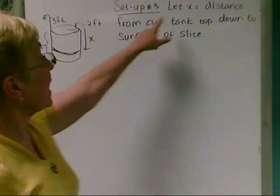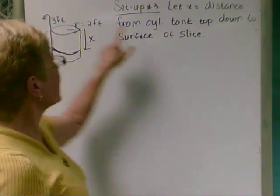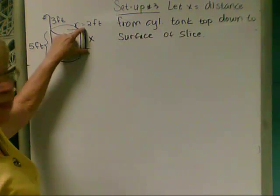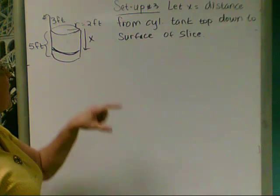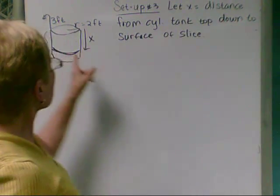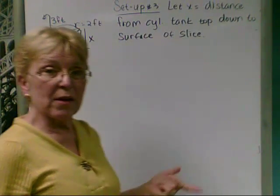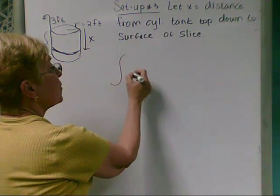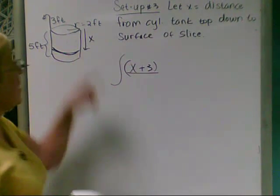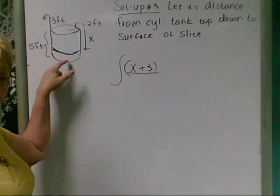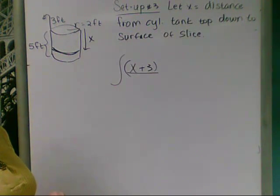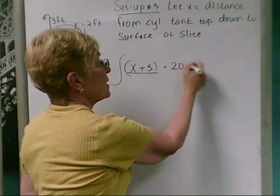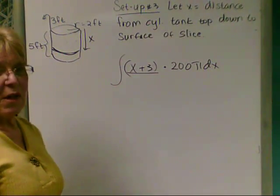This time around, I'm looking at x as the distance from the top of the cylindrical tank down to the surface of the slice. And I'm sure right away you're saying, well, that's not going to get it out of there because I've got to go 3 more. But this is a measurement down to the surface level. So the distance I've got to go is going to be x plus 3 right away, because how far down to get to the surface level of the slice plus 3 more feet just to get out.